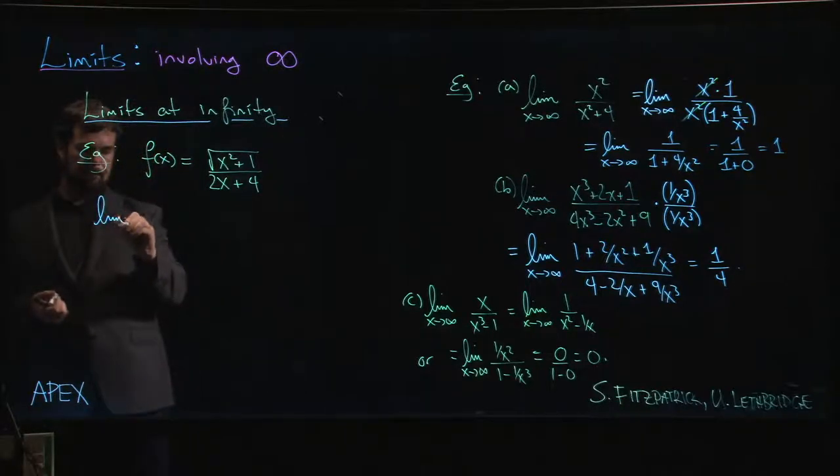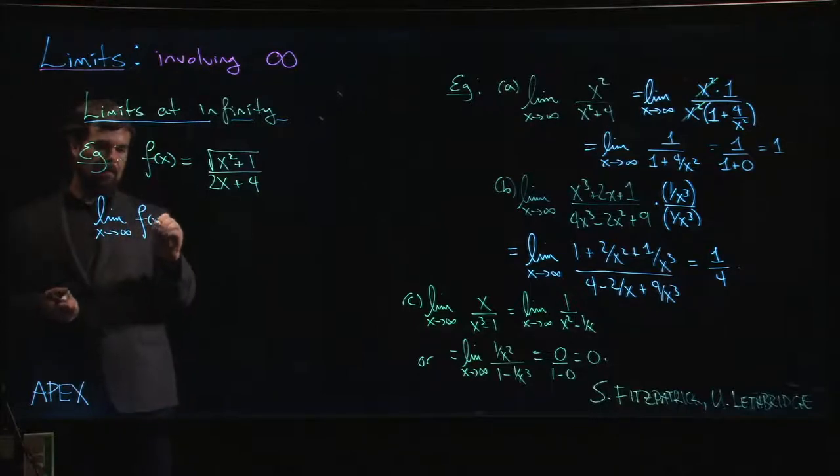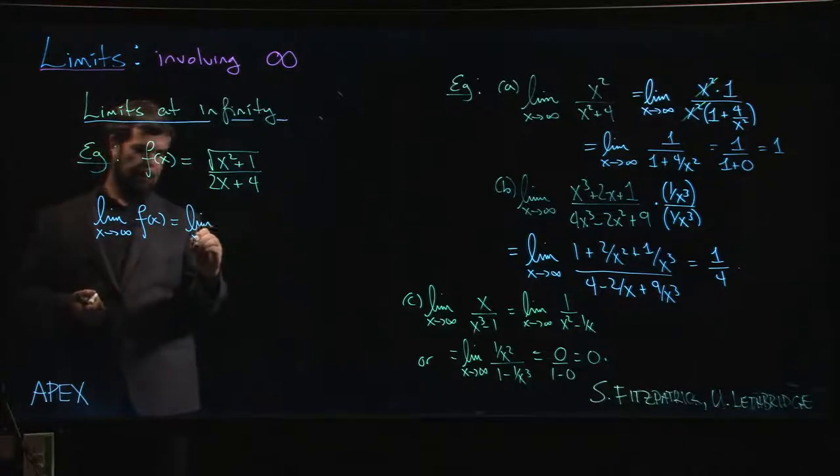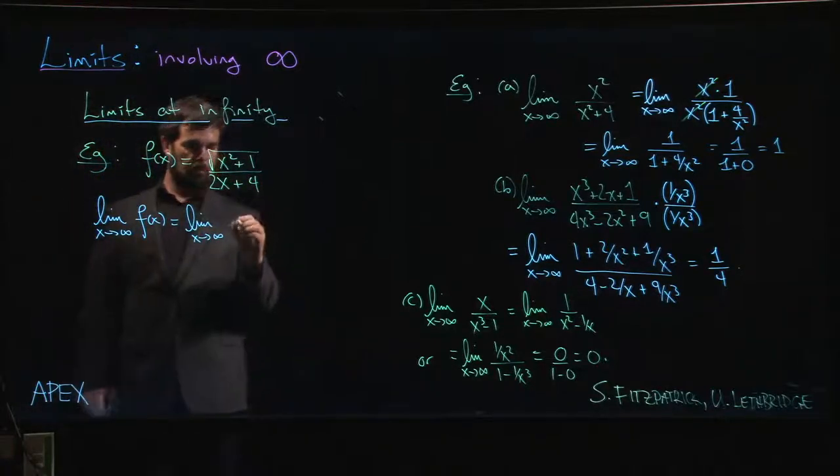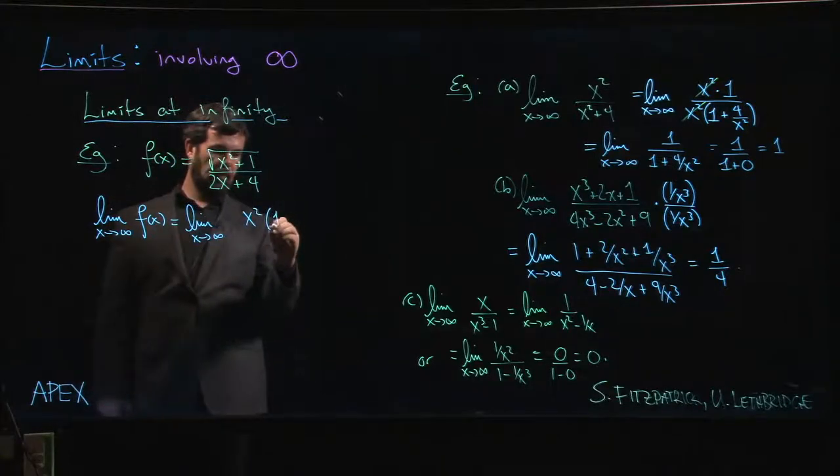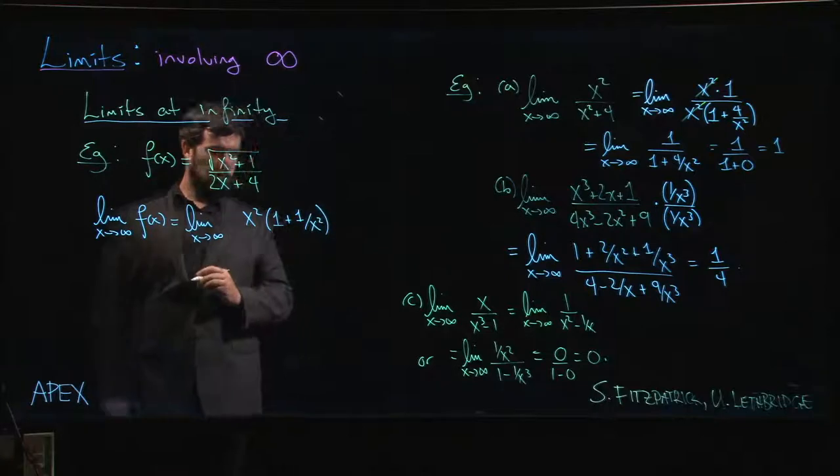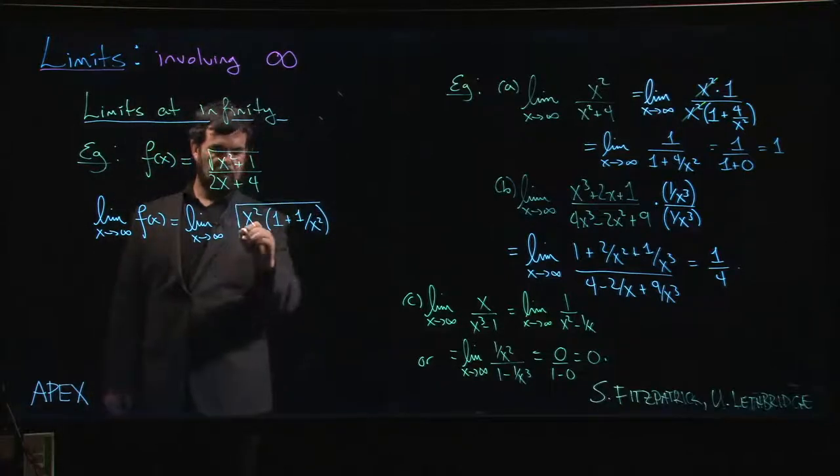So to see how you should proceed in something like this, we say okay, the limit as x approaches infinity of f of x. Well, the first thing we might do is take that x squared plus one, and I'm going to bring out the x squared and write x squared times one plus one over x squared. Okay, now that's all under the square root.